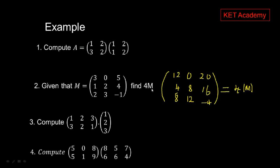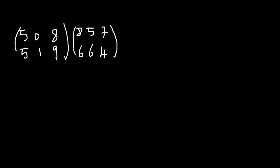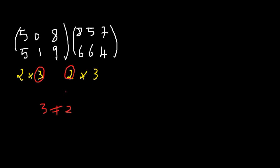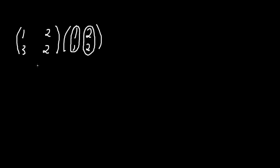The last example: we check the order of the matrix. The first matrix has two rows and three columns. Comparing the orders, we see that the number of columns of the first matrix is different from the number of rows of the second matrix — three is different from two — showing that these matrices are not compatible. Therefore the multiplication is not possible. Our result is simply: not possible, incompatible, or impossible.